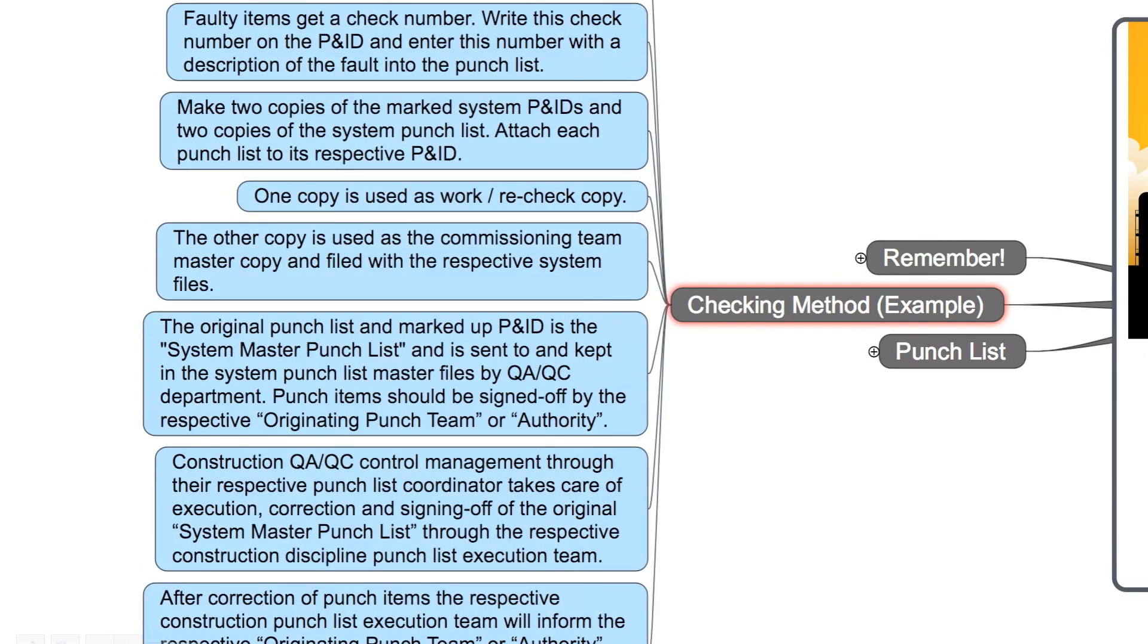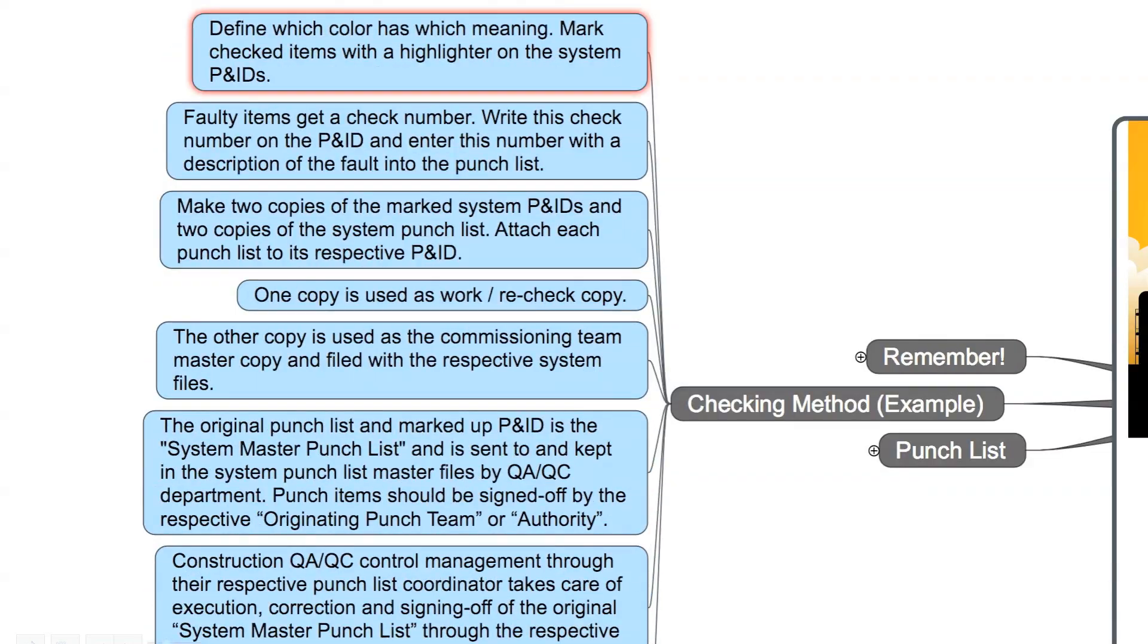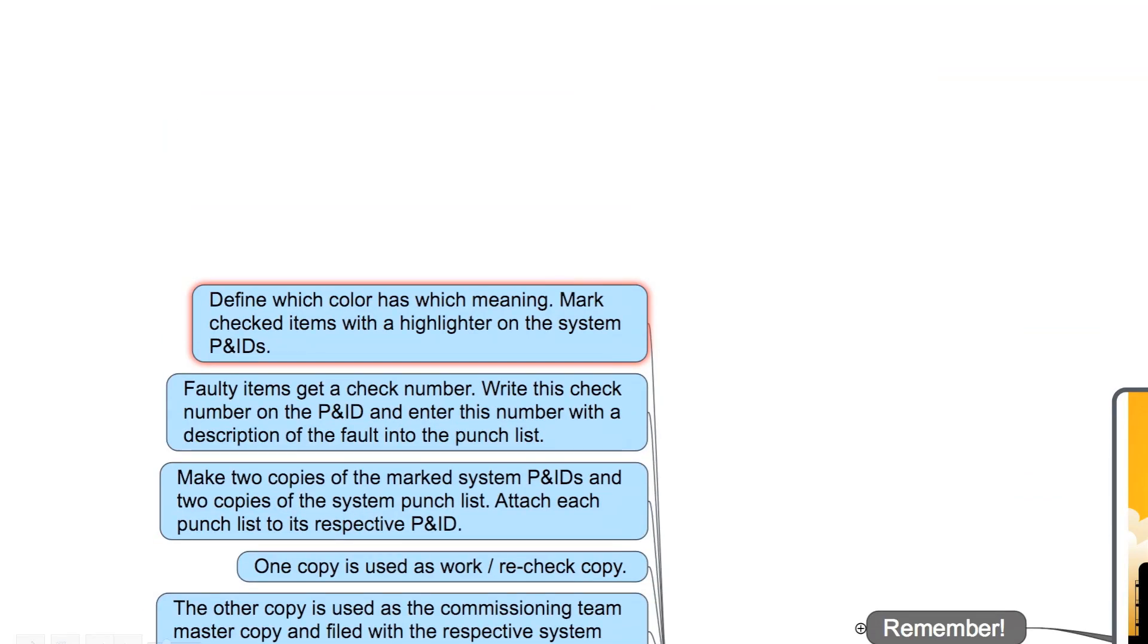I want to give you an example of how to perform a P&ID check. Please be aware that this method can change in different industries, but the basic rules apply. At first, define which color has which meaning. Mark checked items with a highlighter on the system P&IDs. Faulty items get a check number. Write this check number on the P&ID and enter this number with a description of the fault into the punch list.